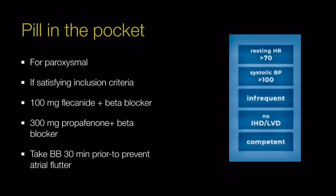Coming to the pill-in-the-pocket approach — a newer strategy for paroxysmal AF. Inclusion criteria are: resting heart rate more than 70, systolic blood pressure more than 100, infrequent episodes of AF, no history of ischemic heart disease or left ventricular dysfunction, and a competent patient. We use either flecainide plus a beta blocker or propafenone plus a beta blocker. The patient takes the beta blocker first, then after 30 minutes takes 100 mg flecainide or 300 mg propafenone. The beta blocker prevents atrial flutter.